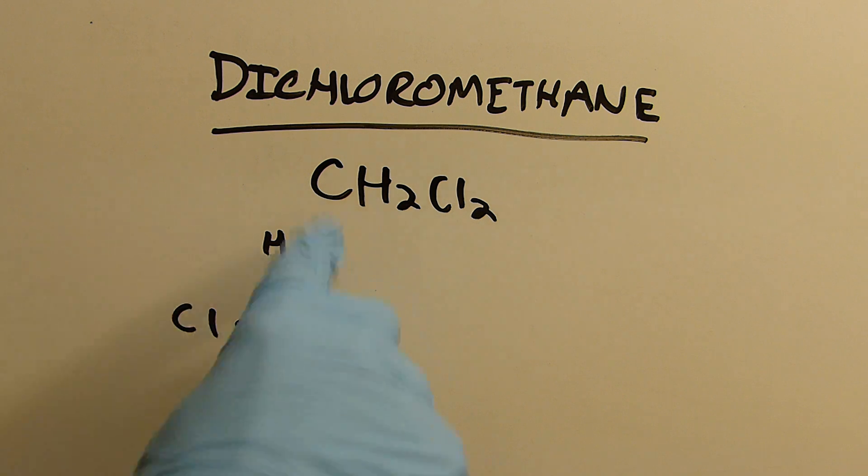Dichloromethane has the formula CH2Cl2 and can be represented by this structure here. You can notice that the chlorines are on opposite sides because of their electronegativity which causes them to repel each other, so they mostly sit in this sort of state and that makes the molecule fairly non-polar.